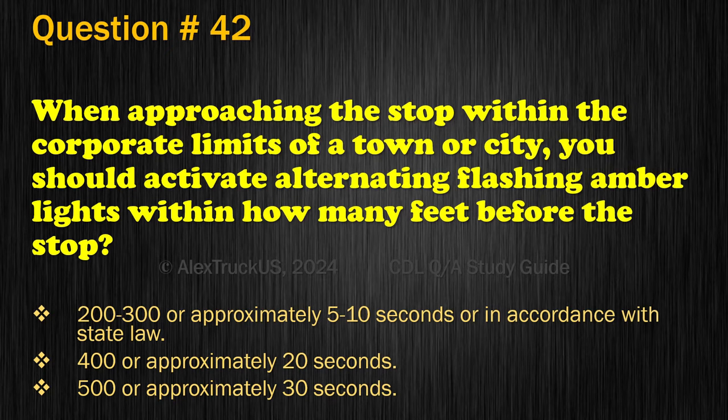Question 73. If the gate comes down as you start to cross the railroad highway crossing, you should: Back up until you are completely off the tracks; Stop immediately and call your dispatcher; or Drive through the gate. The correct answer is: Drive through the gate.